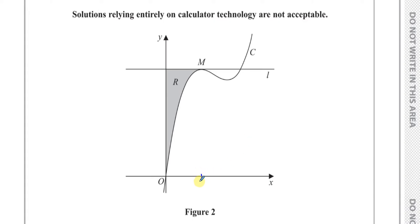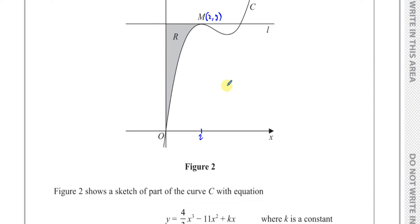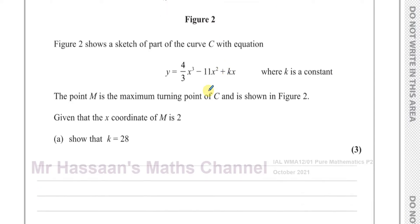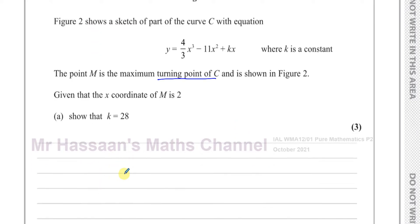So M is at coordinates (2, y_M) — we know the x-coordinate but not the y-coordinate. The clue here is that at a turning point the gradient is zero, so let's find dy/dx first in terms of k.